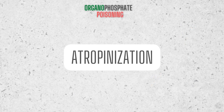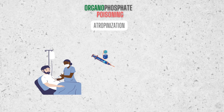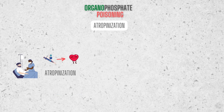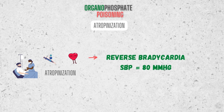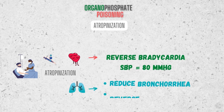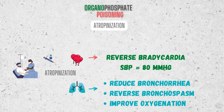It's time to atropinize the patient. Atropine is administered intravenously to restore adequate cardiorespiratory function rapidly, a process often termed atropinization. It is used to reverse bradycardia and improve systolic blood pressure to greater than 80 mmHg. At the same time, it aims to reduce bronchorrhea, reverse bronchospasm and improve oxygenation. Auscultation can be used to confirm the lack of wheeze and crepitations.